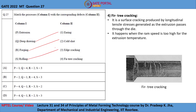The fourth one is fir-tree cracking, a defect found in extruded products. It is a surface cracking produced by longitudinal tensile stresses generated as the extrusion passes through the die. It occurs under conditions when the ramp speed is extremely high for the provided extrusion temperature.